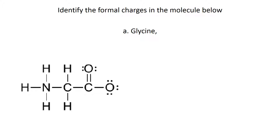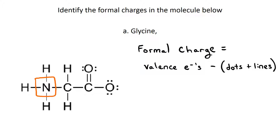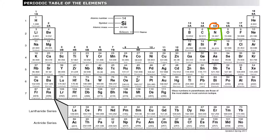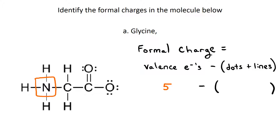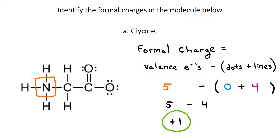Let's try to find all the formal charges on glycine — on each of the atoms in the amino acid glycine — starting with nitrogen. The formula for formal charge is that the formal charge equals the valence electrons minus the dots and the lines around the atom. Nitrogen is in column 5A, so it has five valence electrons. It has zero dots and four lines, so the formula gives us five minus four, which is a plus one charge on that nitrogen.